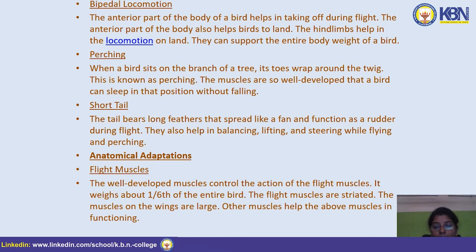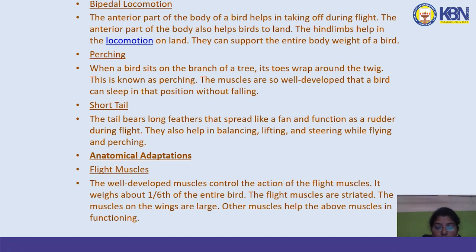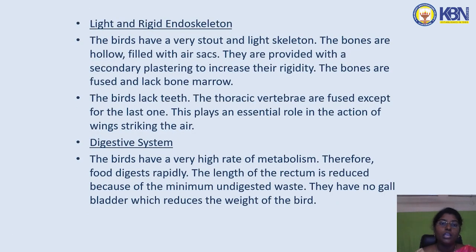For anatomical adaptations, the well-developed flight muscles control the action of flight and weigh about one-sixth of the entire body weight. The flight muscles are striated. Birds have a very stout and light skeleton — the bones are hollow, filled with air sacs, and provided with secondary plastering to increase rigidity. The bones are fused and lack bone marrow. Birds lack teeth. The thoracic vertebrae are fused except for the last one, playing an essential role in wing-striking action.